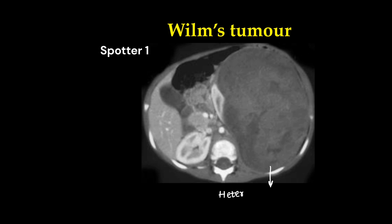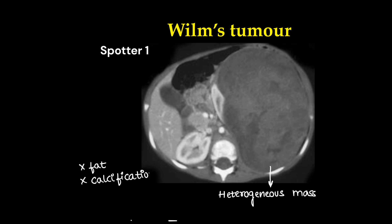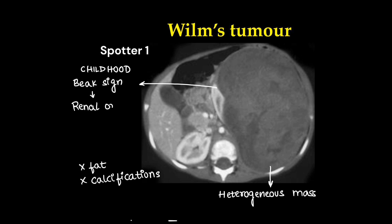This was Wilms tumor. Here we can see a heterogeneously enhancing mass lesion in the abdomen — quite large. There is no fat or calcification within the mass. This is one of the childhood tumors, and it shows the beak sign with the kidney, indicating it is of renal origin.